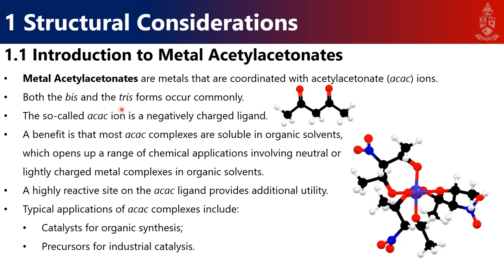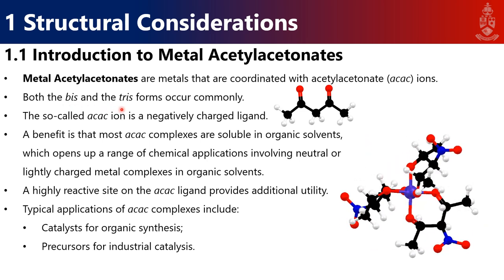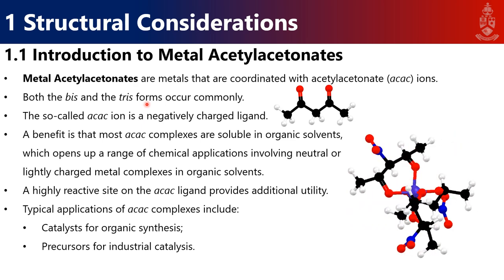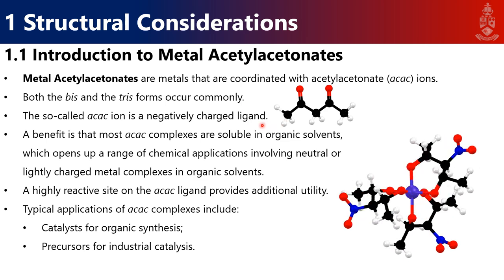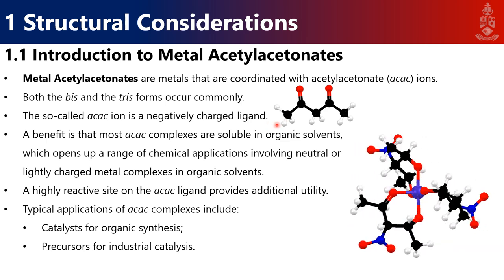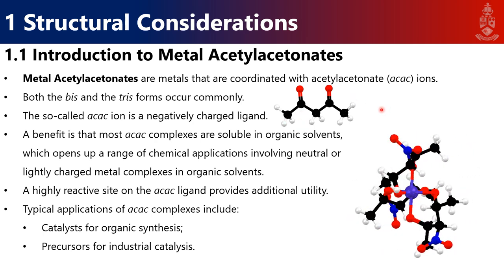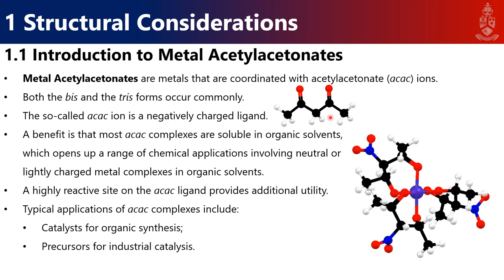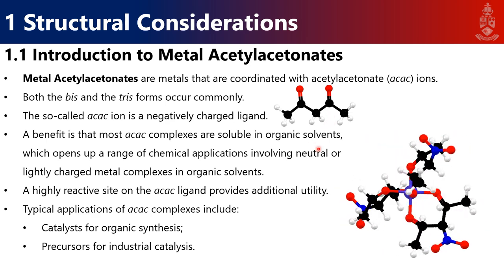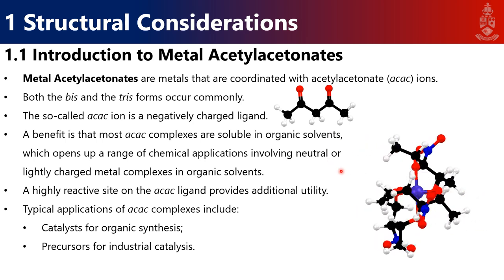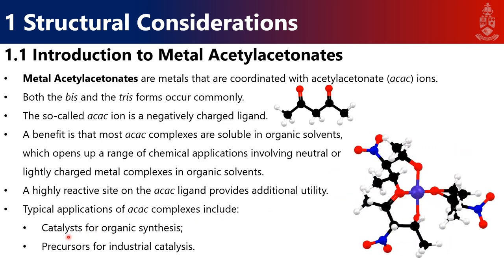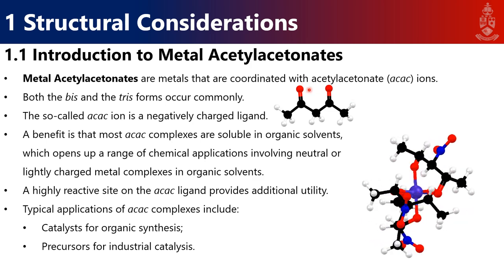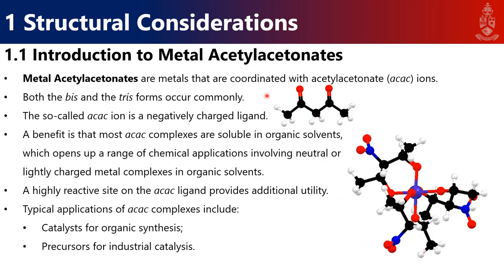AC-AC ligands usually form either Bis or Tris coordination compounds with metals, and we will especially be interested in the Tris coordination in this practical. The AC-AC is usually a negatively charged ion or ligand, which we will get into. A big benefit of these organic ligands is that we can use organic solvents to help with the synthesis, as you will see in your practical guide. They're used as catalysts in organic synthesis, as well as precursors for industrial catalysis, because they're actually a good leaving group from your metal ion.